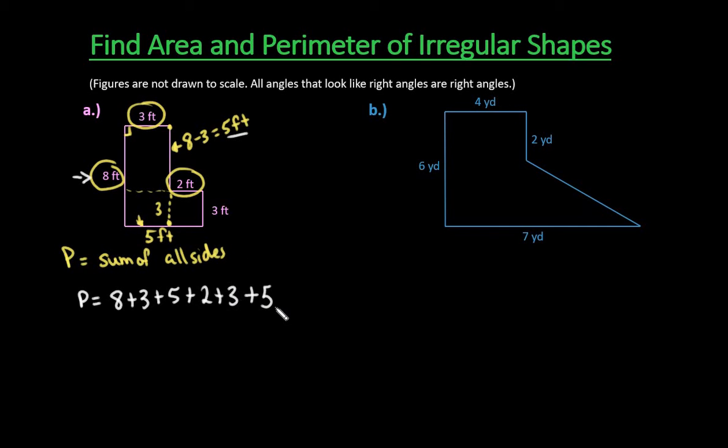You can add this however is easiest for you. I'm going to just go through. The five and the five would give me ten. This right here would be five, so that would put me at fifteen, eighteen, and we can see that we end up with twenty-six feet. So the perimeter around this irregular figure is twenty-six feet.